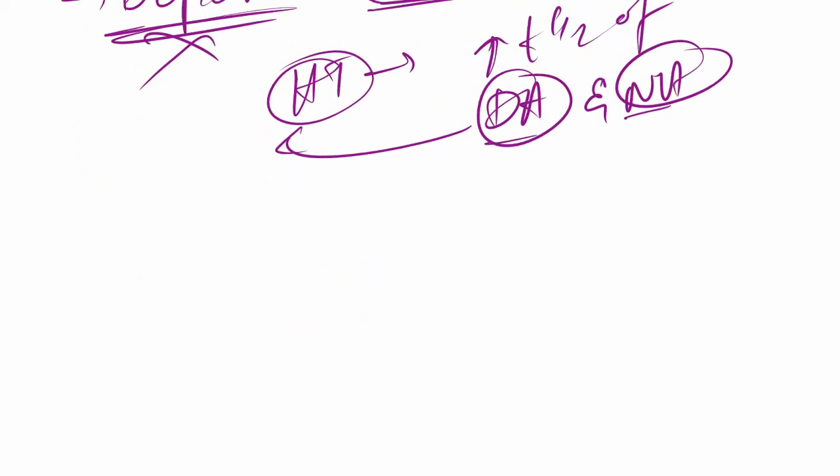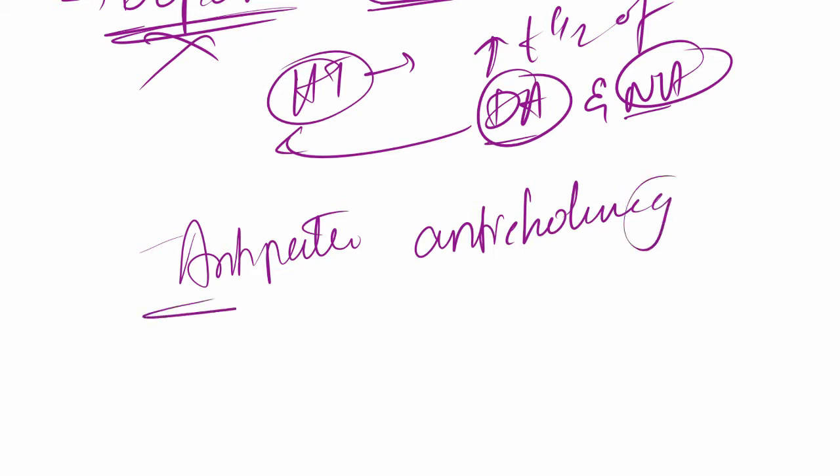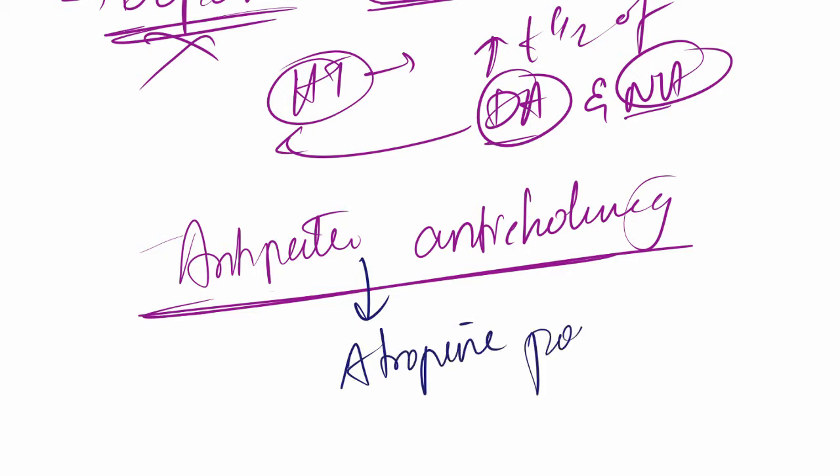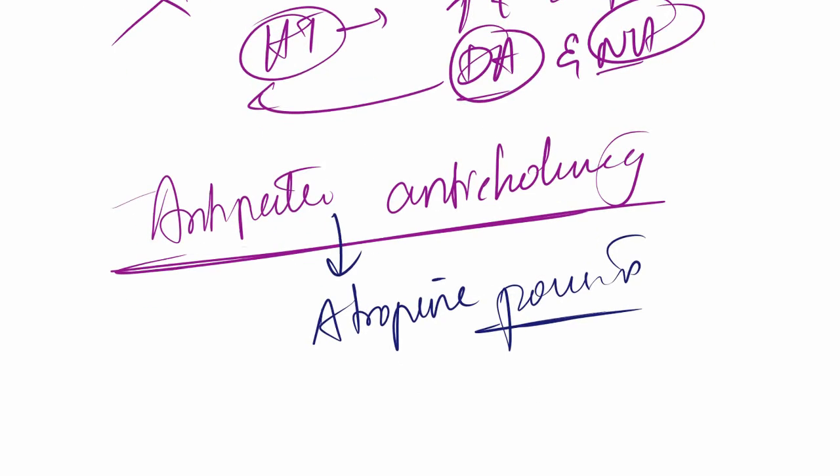They have one more - if the person is on anti-Parkinsonism anticholinergics, basically if you are using anticholinergics to treat this, then there will be symptoms of atropine poisoning. So again, one thing to avoid.